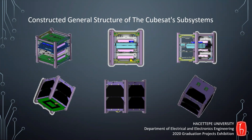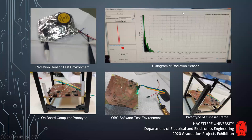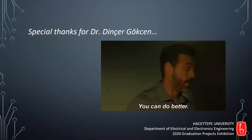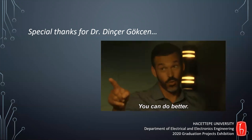All of the subsystems are placed in a stacked form as shown on the upper side. The final structure of the one-unit CubeSat, covered with commercial solar panels, is shown on the lower side. We produced a CubeSat frame, radiation sensor, and onboard computer prototypes. These test environments are shown above. We have special thanks to Dr. Dinca Gökcan for all his support. Thank you for listening.